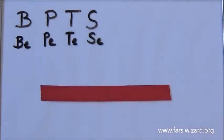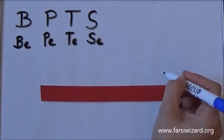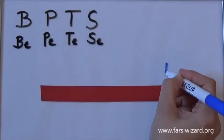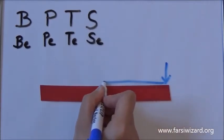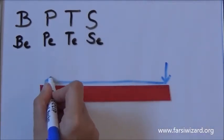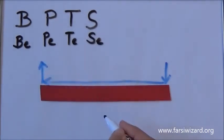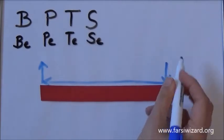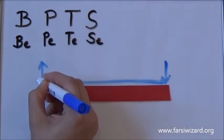I'm going to show you how to write and how to remember each of them. Now all of these four letters will be written in the same way. The only difference will be the number and the place of dots. So right now we are just focused on the basic form of these letters. As you can see it's not very difficult: one small line down, then one big horizontal line, and then we go up.